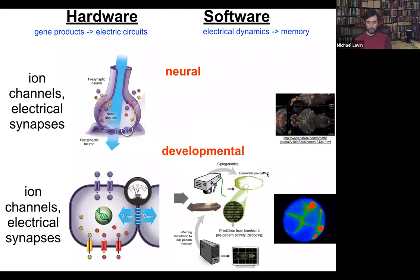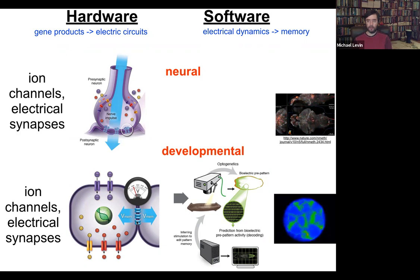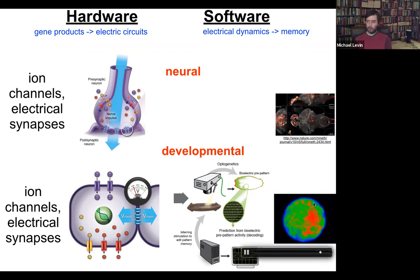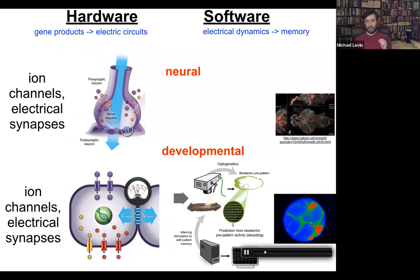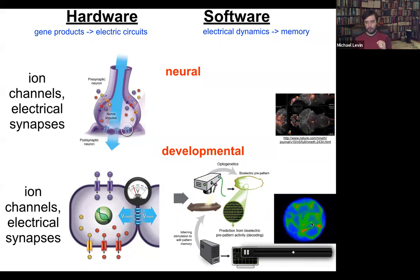It turns out that actually all cells do this. All cells have ion channels. Most cells have electrical synapses known as gap junctions to their neighbors. We have undertaken this project to try to do the same kind of decoding. Here's an embryo, and we would like to read all the electrical conversations that bind the individual cells into a collective that can undergo anatomical homeostasis towards large states — like build a limb, build a kidney, and so on.